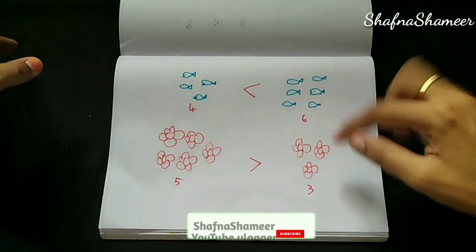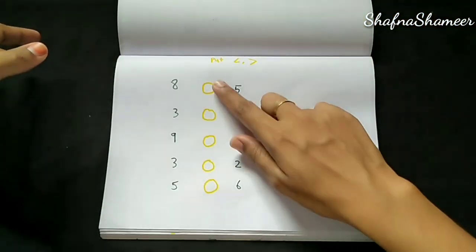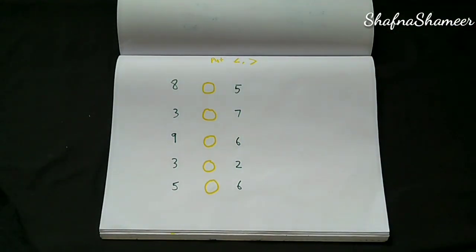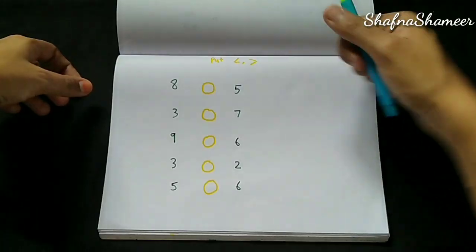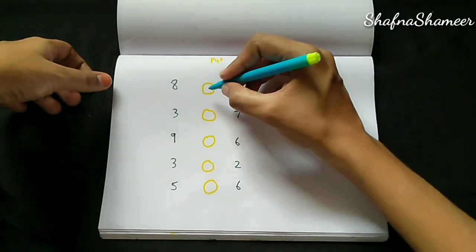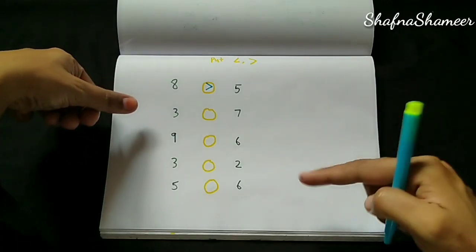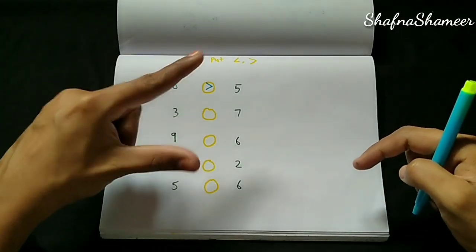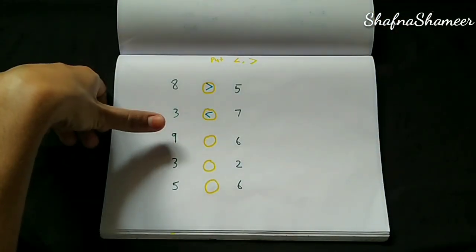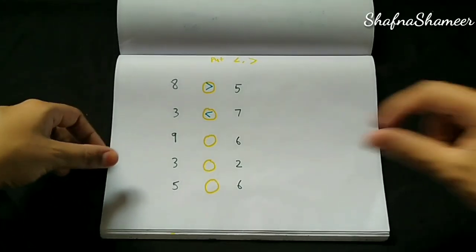Here we are going to count 1, 2, 3, 4, 5. Here we are going to count 1, 2, 3, 4, 5, 6. Here we are going to count 1, 2, 3, 4, 5, 6. Here we are going to count 1, 2, 3, 4, 5, 6, 7, 8. 7 is big number, less than. 9, 6 — 9 is greater than 6.